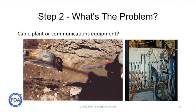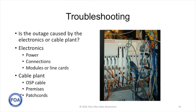The first thing you need to do is find out what the problem is. Troubleshooting begins with deciding whether it's the cable plant or the communications equipment. Is the outage caused by the electronics or the cable plant? For the electronics, we want to look at the power, connections, and modules and line cards. For the cable plant, we're going to divide it into three parts: outside plant cable, premises cable, and patch cords.